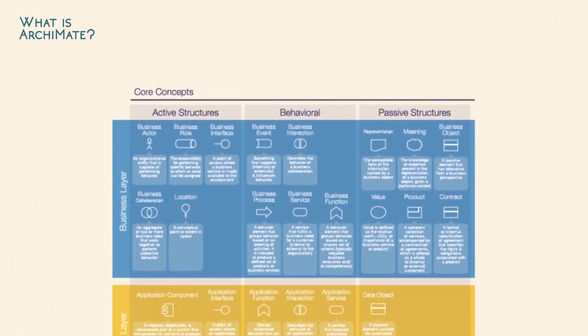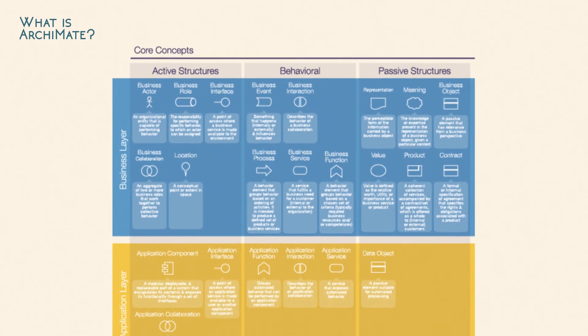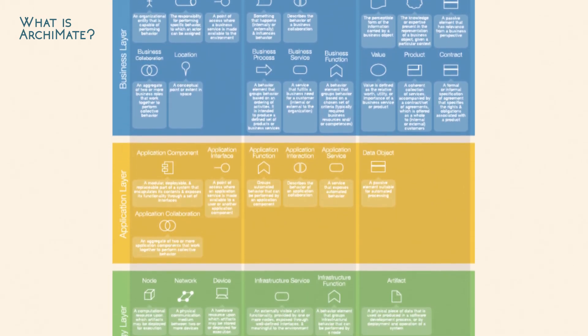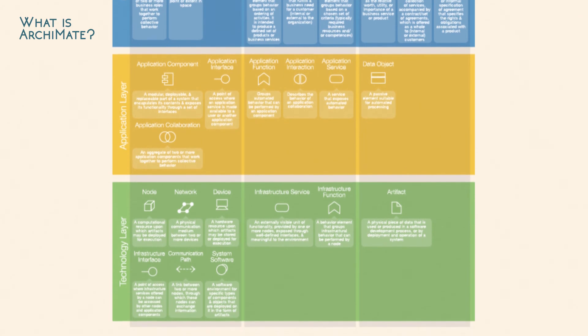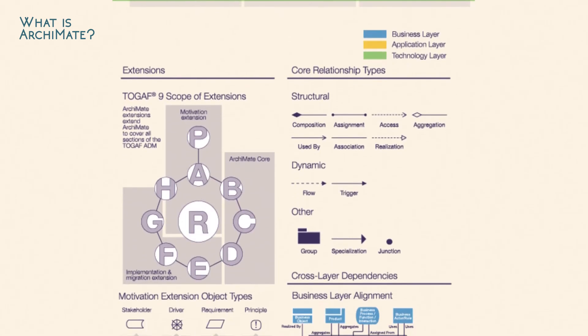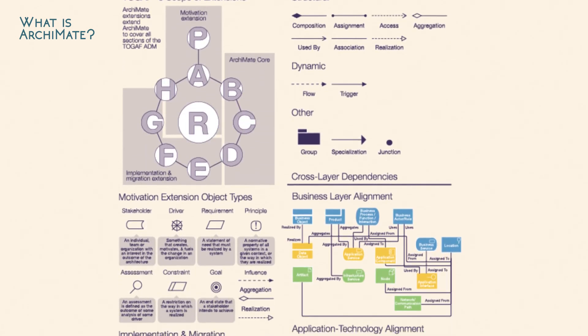The role of Archimate is to provide a graphical language for the representation of an organization's enterprise architecture over time, including the motivation for it and the programs, projects, and migration paths to implement it.